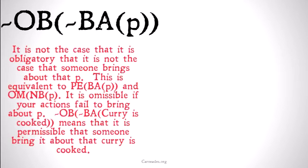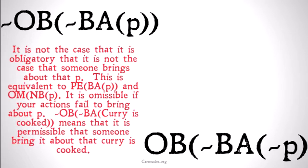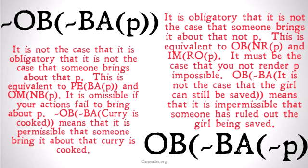Not OBBA not P — it is not the case that it is obligatory that it is not the case that someone brings it about that P — is equivalent to PE-BAP and OM-NBP: it is omissible if your actions fail to bring about P. 'Not OBBA, curry is cooked' means it is permissible that someone bring it about that curry is cooked, or omissible that someone does not. OB-NBA-not-P — it is obligatory that it is not the case that someone brings it about that not P — is equivalent to OB-NR-P: it's impermissible that you rule out P. 'OB not BA, it is not the case that the girl can still be saved' means it is impermissible that someone has ruled out the girl being saved.